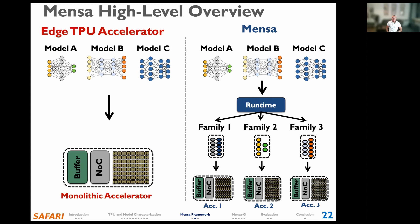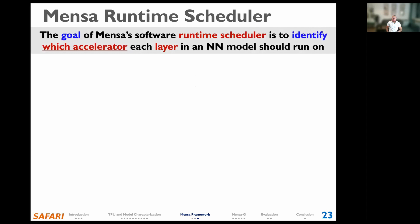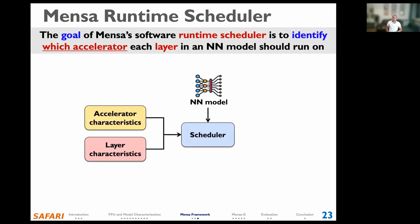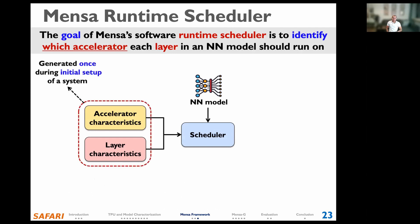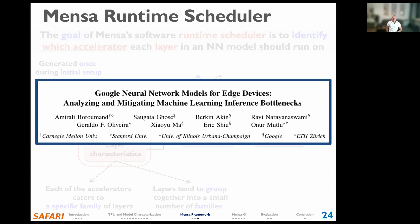The goal of the MENSA software runtime scheduler is to identify which accelerator each layer in a neural network model should run on. The scheduler takes a neural network model as input along with the characteristics of each layer and the key characteristics of the available hardware accelerators. Different layers tend to group into a smaller set of layer families sharing key properties, so we can have a small pool of edge accelerators where each targets a specific family of layers. The scheduler generates a per-layer mapping between layers and accelerators using a mapping heuristic. We invite you to check our paper for more details on our scheduling heuristics.